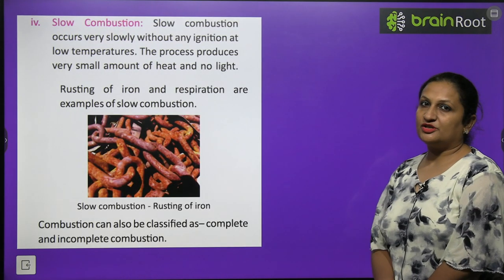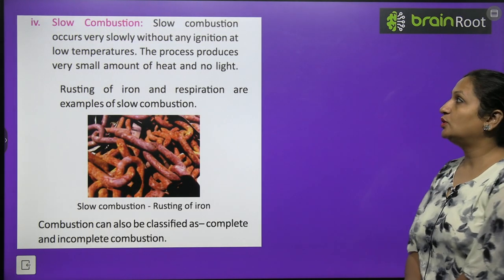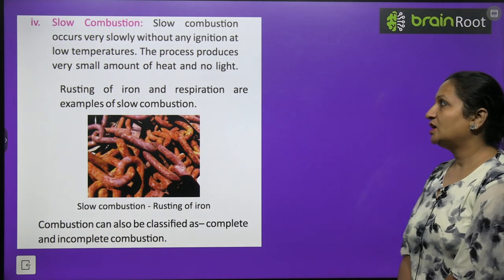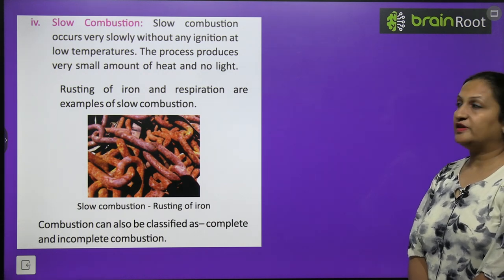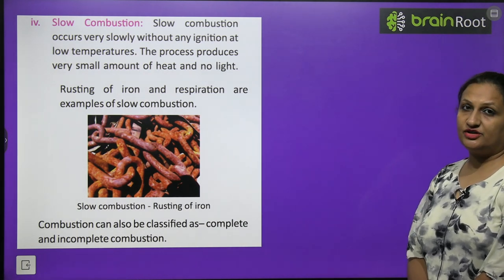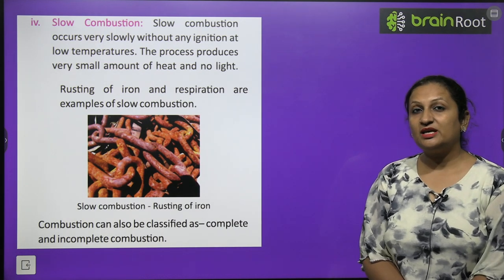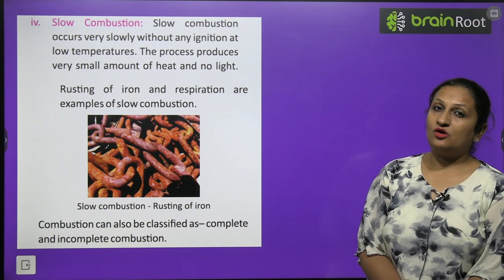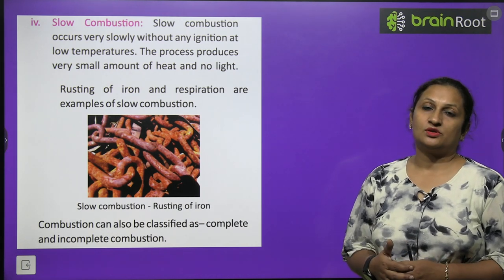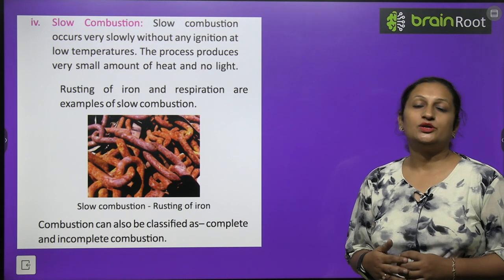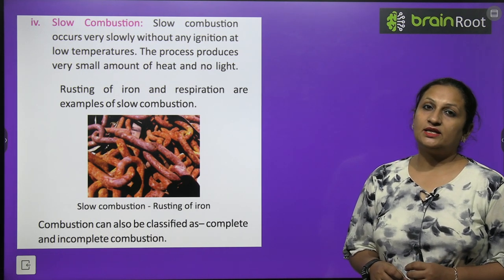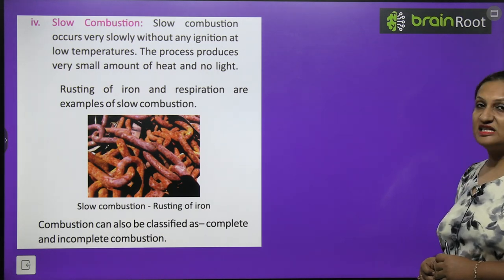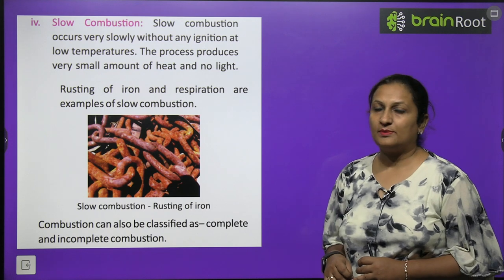Slow combustion occurs gradually, without needing to reach ignition temperature. It produces very small amounts of heat and no light. Examples include respiration — oxidation of food in the presence of oxygen — which is a slow combustion process releasing energy but no light. Rusting of iron and respiration are both examples of slow combustion.